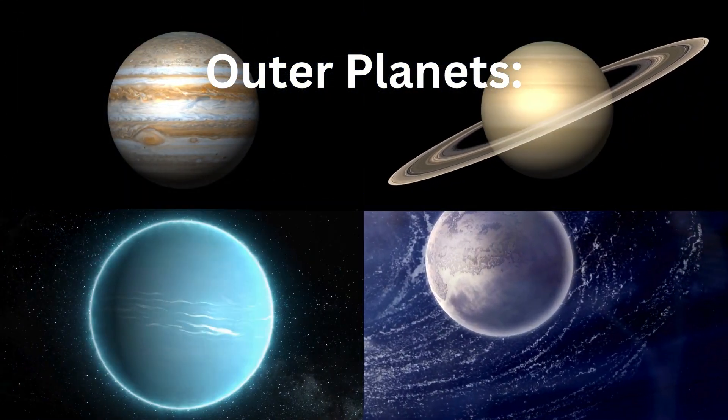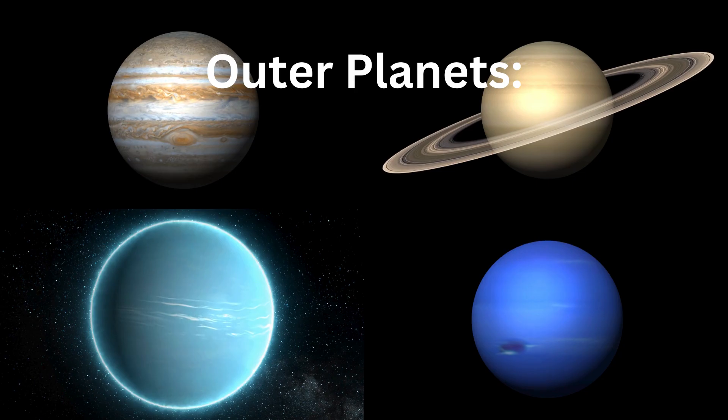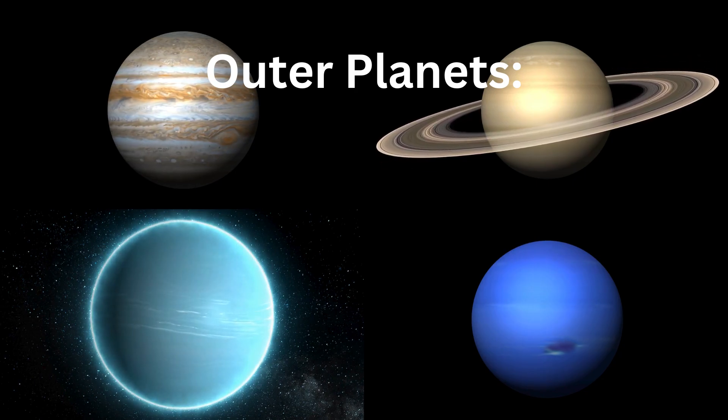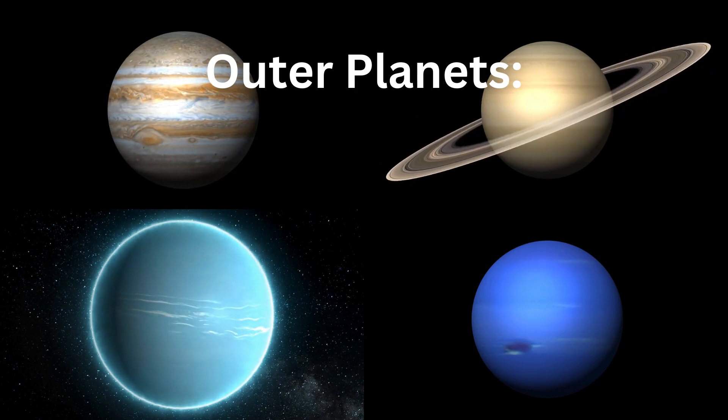Outer planets: Jupiter, Saturn, Uranus, and Neptune, known as gas giants, Jupiter and Saturn, and ice giants, Uranus and Neptune.